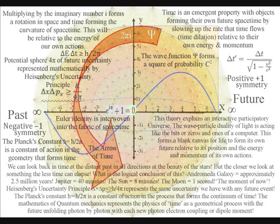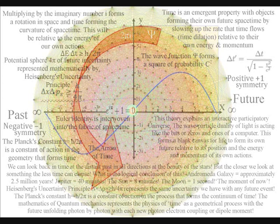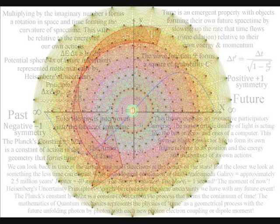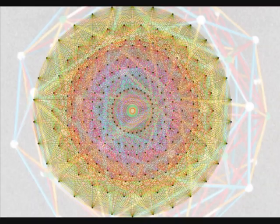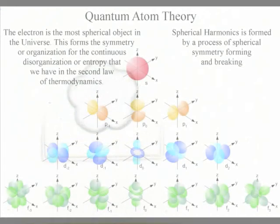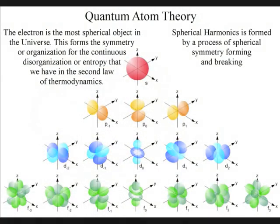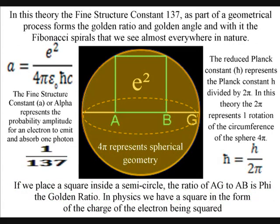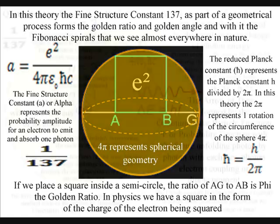This video explains a simple geometrical process that forms the potential for the E8 lattice and quasi-crystals. The geometry for this process is in the form of spherical symmetry forming and breaking. The electron is the most spherical object in the universe, and this process is relative to the surface of the sphere. The electron charge is squared, representing the radius of the sphere being squared and multiplied by 4π to form the surface area.